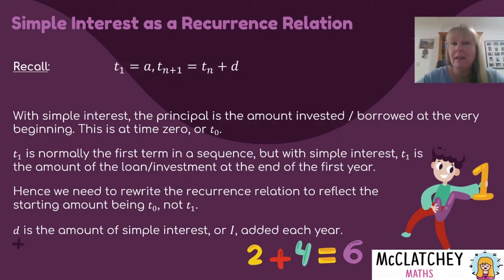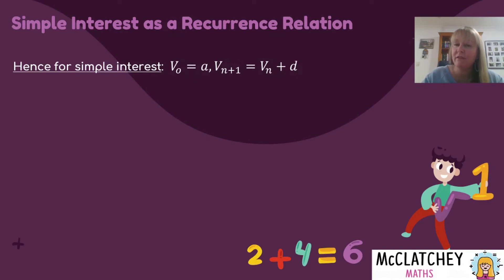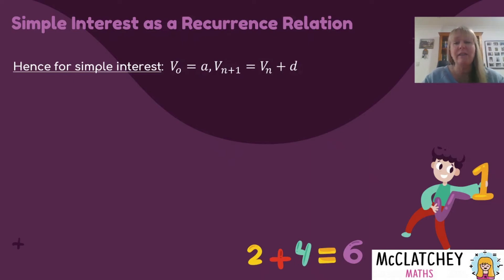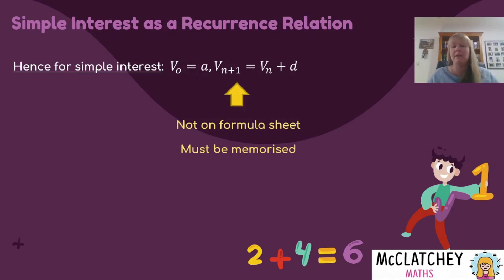Something a little bit different about a recurrence relation for simple interest is that D is the amount of simple interest that gets added every single year, because it's the same amount every year in simple interest scenarios. You would recall from I equals PIN that that's a calculation — we actually have to calculate how much gets added on every year. It's the amount of interest that gets earned or paid; it's capital I. So our common difference equals I, and T0 equals our principal. For simple interest we use a different recurrence relation: instead of writing T1 for the first term, we write V0, which means our value at time zero equals A — that's our principal. Then our value in the nth year plus the interest we earn in that year gives us the value at the end of the next year. This is not on your formula sheet, so you need to memorize it.